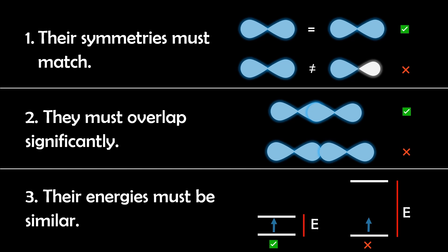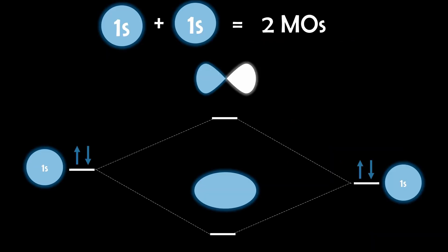For atomic orbitals to actually combine into molecular orbitals three key conditions must be met. One, their symmetries must match, two, they must overlap significantly, and three, their energies must be similar. Also, the number of molecular orbitals formed always equals the number of atomic orbitals involved and these molecular orbitals are filled from lowest to highest energy following the Aufbau principle just like atomic orbitals.